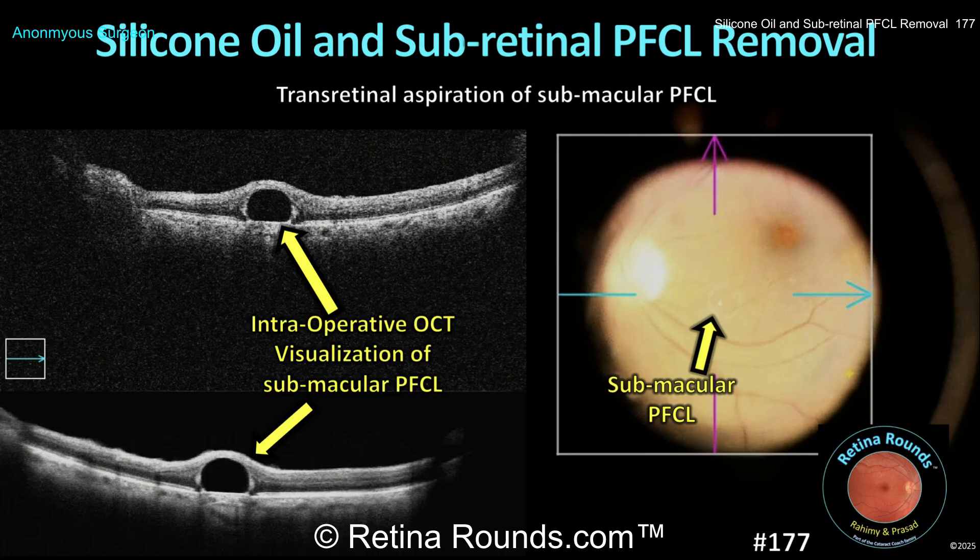We'll comment on a case involving a patient who previously underwent vitrectomy with silicone oil tamponade for retinal detachment repair. Postoperatively, a submacular PFCL bubble was detected, and the patient is now scheduled for surgery to remove both the oil and the submacular PFCL. We'll discuss key surgical decision points, anticipated complications, and share strategies and pearls for these challenging scenarios.